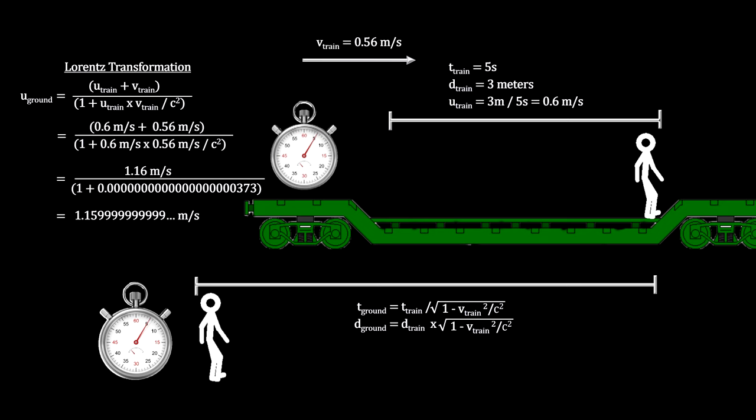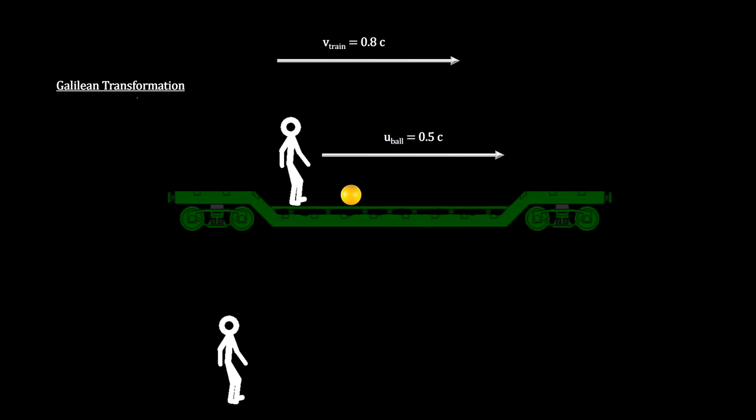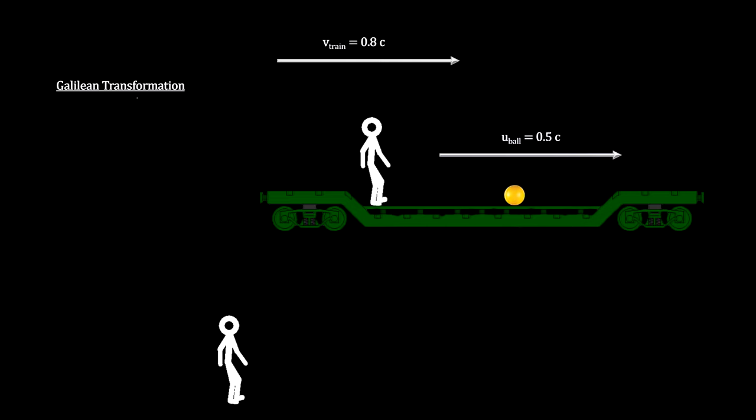But at these speeds, it is too small a difference to notice. Now let's shift the super train into high gear and say its velocity is eight-tenths of the speed of light. And the person on the train kicks the ball at one-half the speed of light.